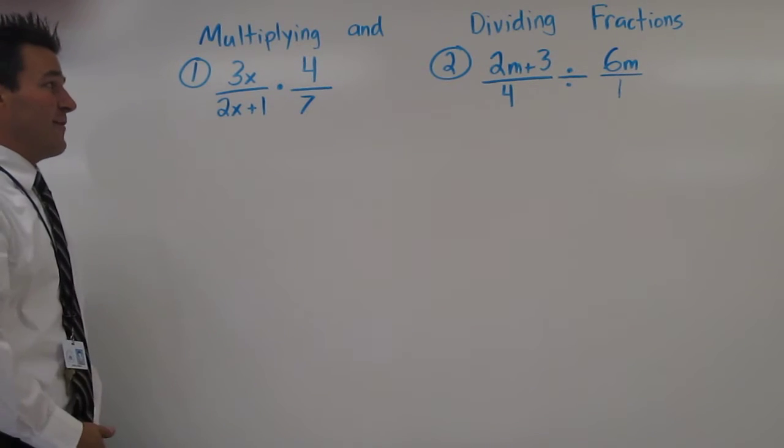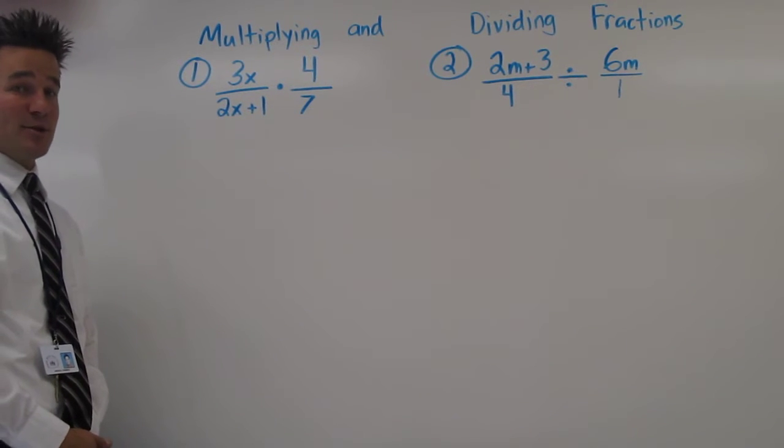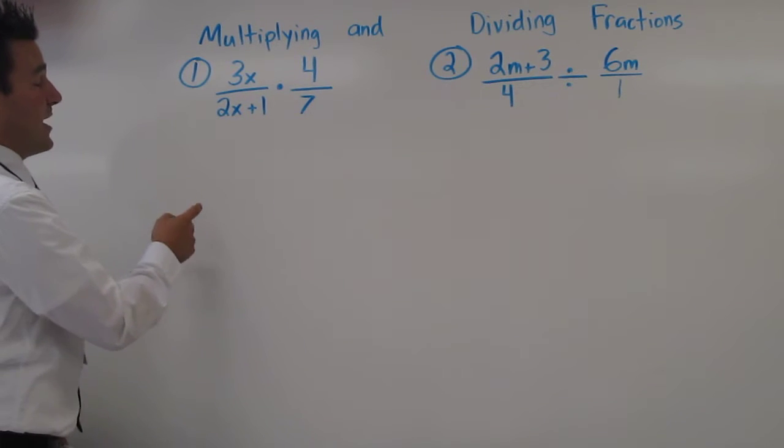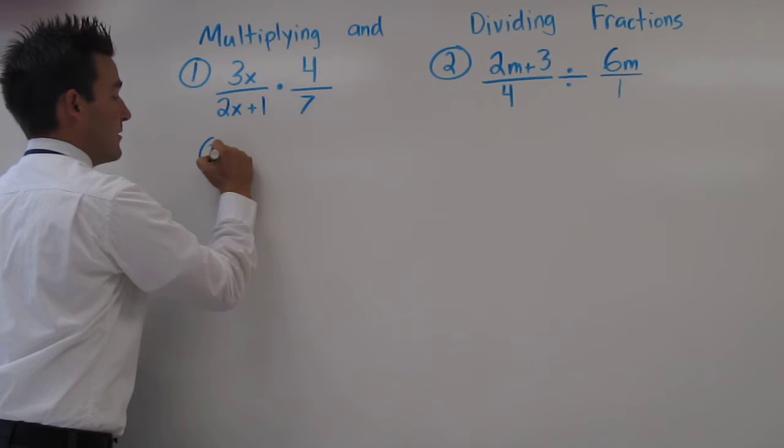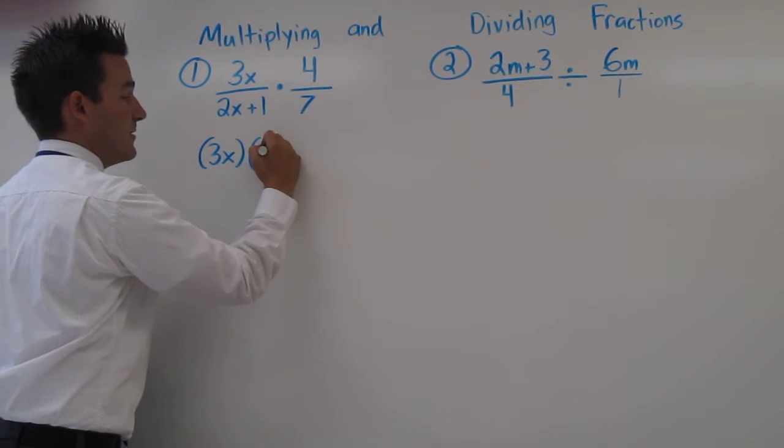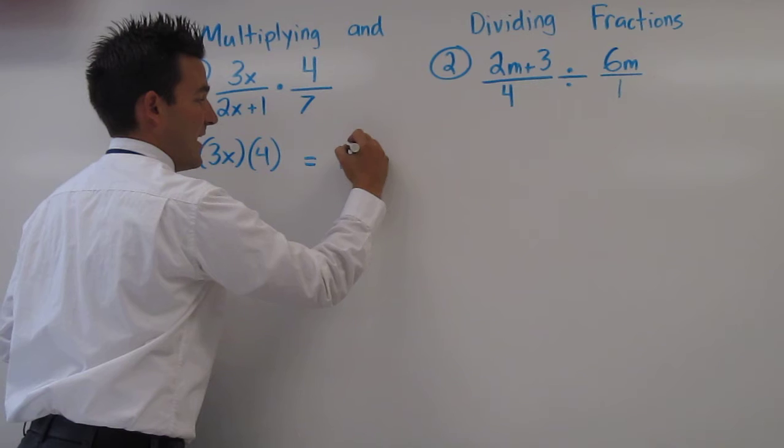When multiplying fractions, we simply multiply the numerators, then multiply the denominators. So the numerators are 3x and 4. 3x times 4 is 12x.